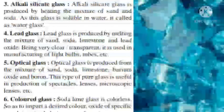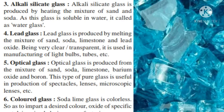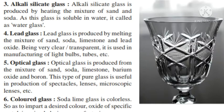Third: Alkali Silicate Glass. Alkali silicate glass is produced by heating a mixture of sand and soda. As this glass is soluble in water, it is called water glass. Fourth: Lead Glass. Lead glass is produced by melting a mixture of sand, soda, limestone, and lead oxide. Being very clear and transparent, it is used in manufacturing of light bulbs, tubes, etc.